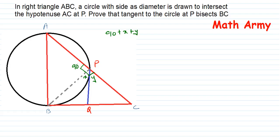Writing this out: 90 plus X plus Y equals 180. Therefore, X plus Y equals 180 minus 90, which gives X plus Y equals 90 degrees.